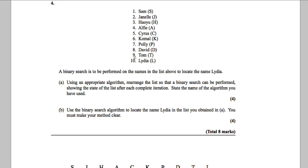Question four: we've got a list of one to ten of various people - Sam, Janelle, Howard, Alfie, Cyrus, Komal, Holly, David, Tom, and Lydia. We are told a binary search is to be performed on the names to locate Lydia. Use an appropriate algorithm to rearrange the list so that binary search can be performed, showing the state of the list after each complete iteration. State the name of the algorithm.